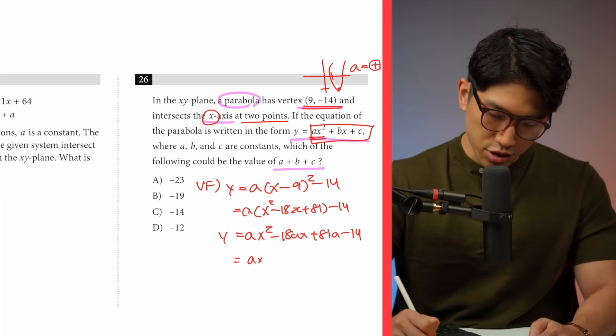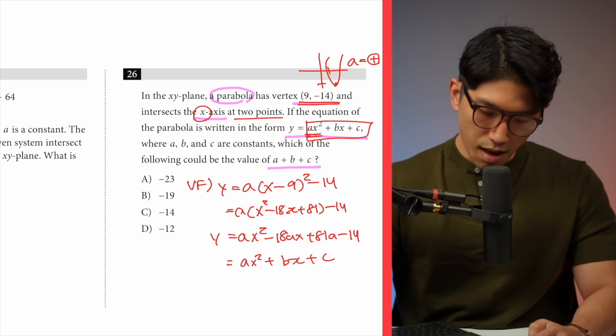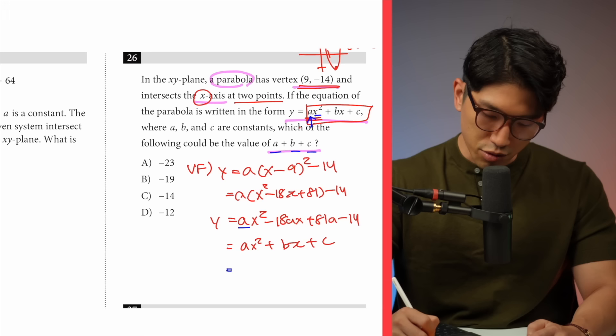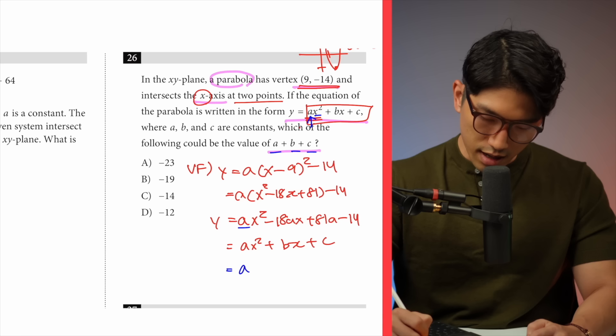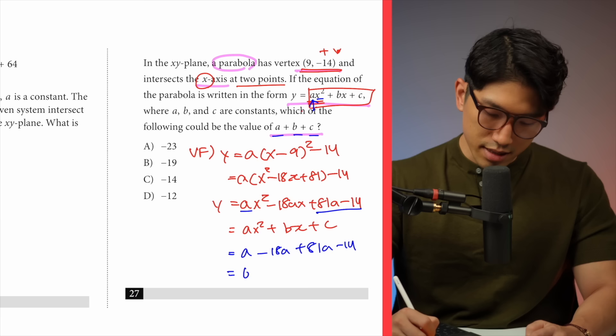Because the question is asking us to find a plus b plus c, let's work that out. Our a value is the coefficient of x squared, which is just a. Our b value is the coefficient of x, which is minus 18a. Our c value is the constant 81a minus 14. Combining like terms, we get 64a minus 14. That is what a plus b plus c equals.